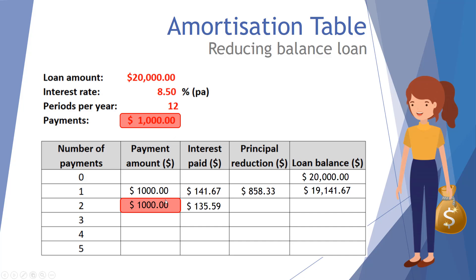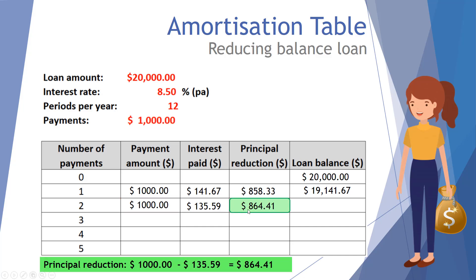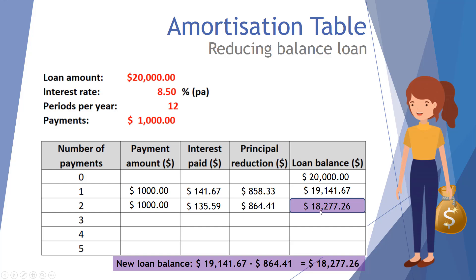The interest for payment two comes to one hundred and thirty five dollars and fifty nine cents — slightly less than last time. She pays one thousand dollars; one hundred and thirty five dollars and fifty nine cents goes to interest, giving a principal reduction of eight hundred and sixty four dollars and forty one cents. Because the balance is less, the interest is less, so more of the thousand dollars reduces the principal. The new balance is nineteen thousand one hundred and forty one dollars and sixty seven cents minus eight hundred and sixty four forty one, which is eighteen thousand two hundred and seventy seven dollars and twenty six cents.